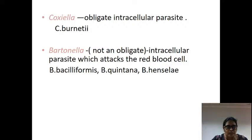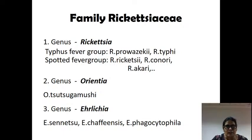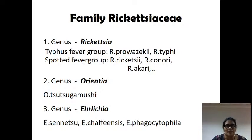Why were Coxiella and Bartonella included originally? Before knowing that, we need to understand the features of Rickettsia. These are obligate intracellular parasites — they cannot grow in normal culture media like other bacteria; they need cell lines like viruses. Previously they were thought to be viruses, but they were excluded because they possess many enzymes, can divide by binary fission, and can be killed by antibacterial agents. So these are reclassified back into bacteria.